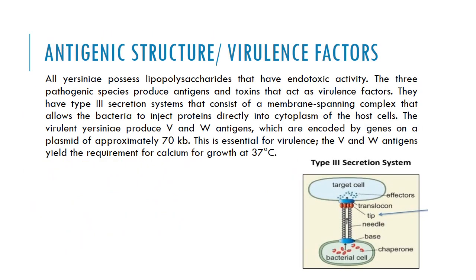The antigenic structure and various virulence factors of Yersinia pestis help the bacteria increase its pathogenicity. One of the most important antigenic structures is lipopolysaccharides, which have endotoxic activity. The three pathogenic species — Yersinia pestis, Yersinia pseudotuberculosis, and Yersinia enterocolitica — produce antigens and toxins that act as virulence factors. They have type three secretion systems consisting of a membrane-spanning complex that allows the bacteria to inject proteins directly into the cytoplasm of the host cell.